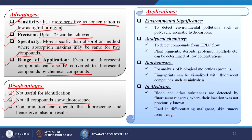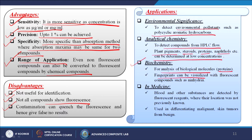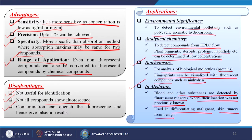Advantages of fluorescence spectroscopy: sensitivity — more sensitive, as concentration can be as low as micrograms per milliliter; precision — up to 1 percent can be achieved; specificity — more specific than absorption methods where absorption maxima may be the same for two compounds; range of applications — even non-fluorescent compounds can be converted to fluorescent compounds by chemical means. Disadvantages: not useful for identification, not all compounds show fluorescence, and contamination can quench fluorescence giving false or no results. Applications: environmental significance — detecting environmental pollutants such as polycyclic aromatic hydrocarbons; analytical chemistry — detecting compounds from HPLC flow, plant pigments, steroids, proteins, naphthalols at low concentrations; biochemistry — analysis of biological molecules like proteins, fingerprints visualized with fluorescent compounds such as ninhydrin; medicine — blood and other substances detected by fluorescent reagents, used in differentiating malignant skin tumors from benign.